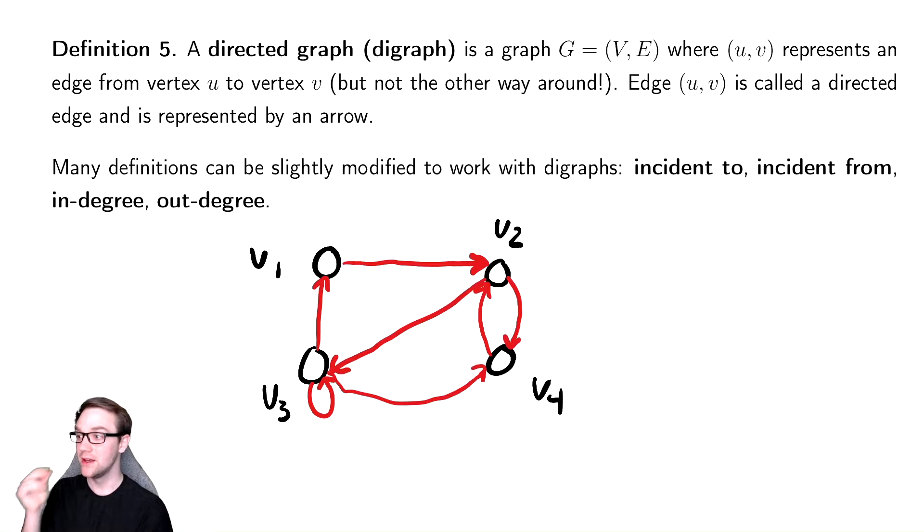The in-degree is the number of edges which point into a vertex. So, for V1 here, for example, the in-degree is 1 because there's one arrow pointing into it. The out-degree of V1 is also 1 because there's one arrow leaving it.